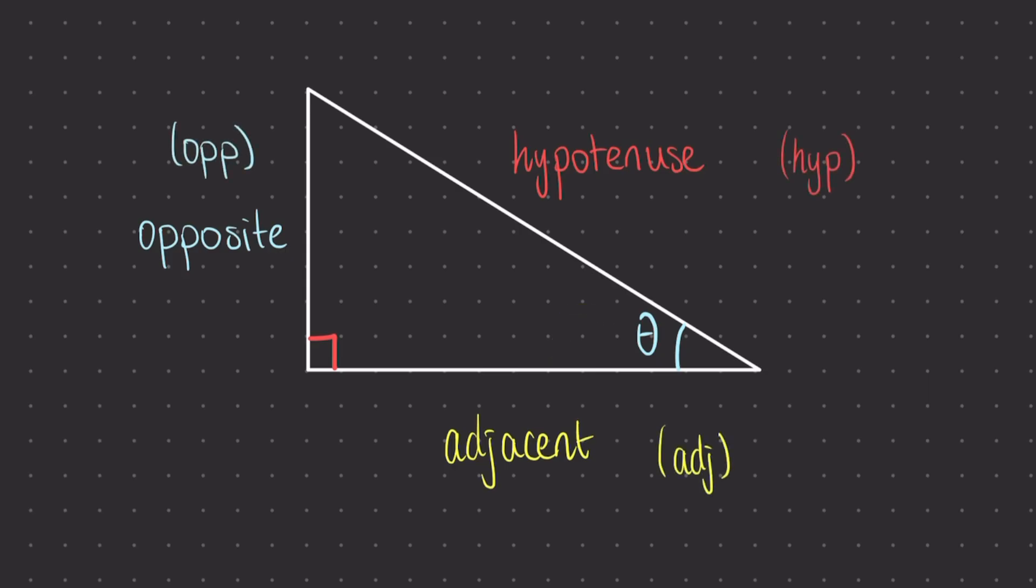You might find that these three sides are shortened to these three letter abbreviations. And shortened even further, you might find these sides just represented by the capital letters at the beginning of their names. So for hypotenuse, we use capital H, adjacent capital A, and opposite capital O.